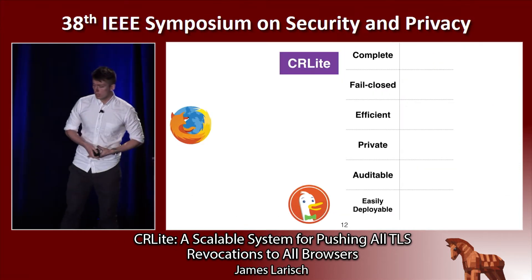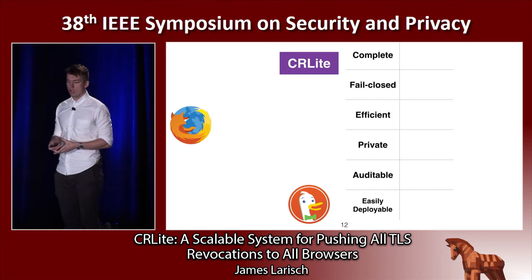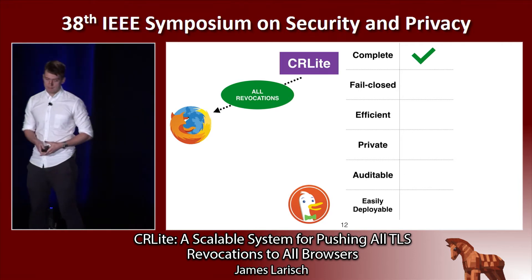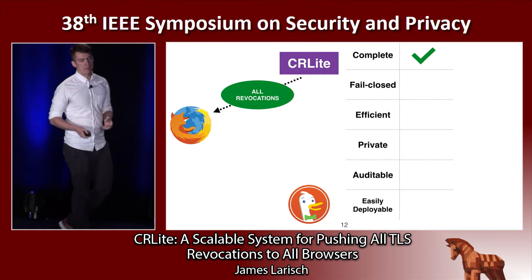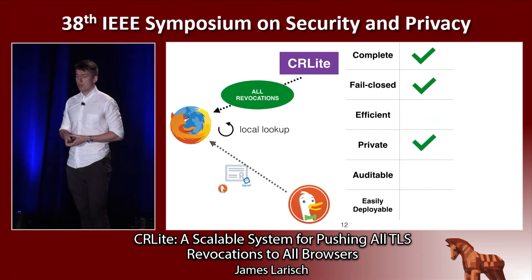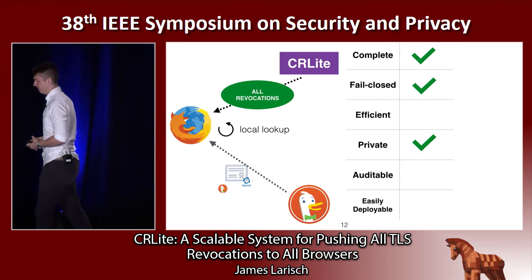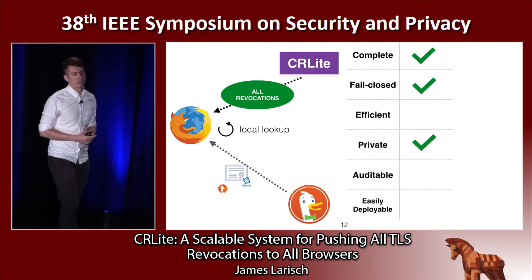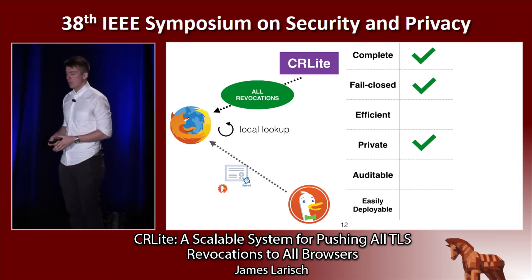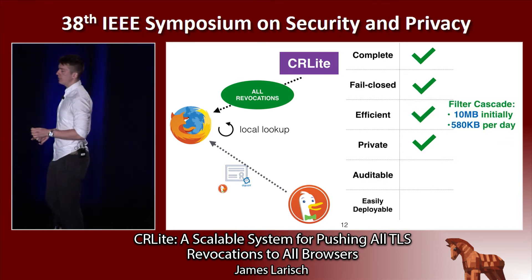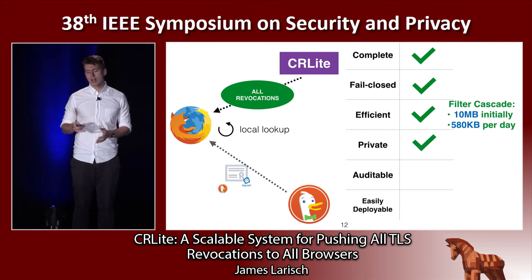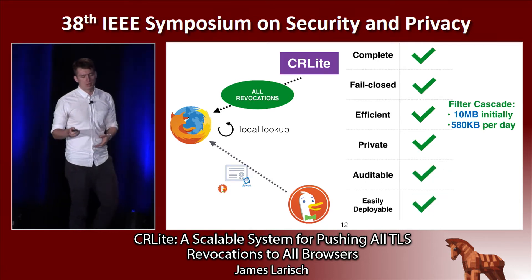So we introduced CRL Lite, which ships the revocation status of all TLS certificates to all clients. Because clients have access to all the revocation information locally, and as long as they have access to our daily updates, they can adopt a fail-closed security posture. And since they're performing the checks locally, we get privacy for free. If Apple takes 76 megabytes to send only their revocations, how can we expect to send all revocations efficiently? We send all the revocations using only 10 megabytes initially, with a daily update of 580 kilobytes on average. Our system is auditable and easily deployable.